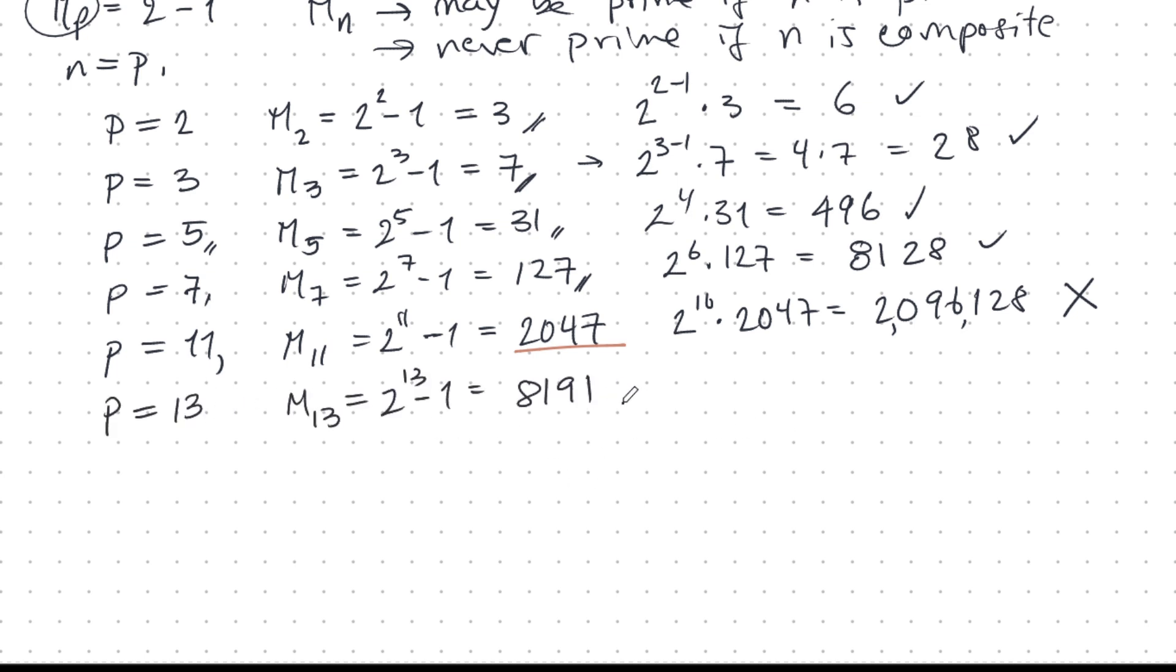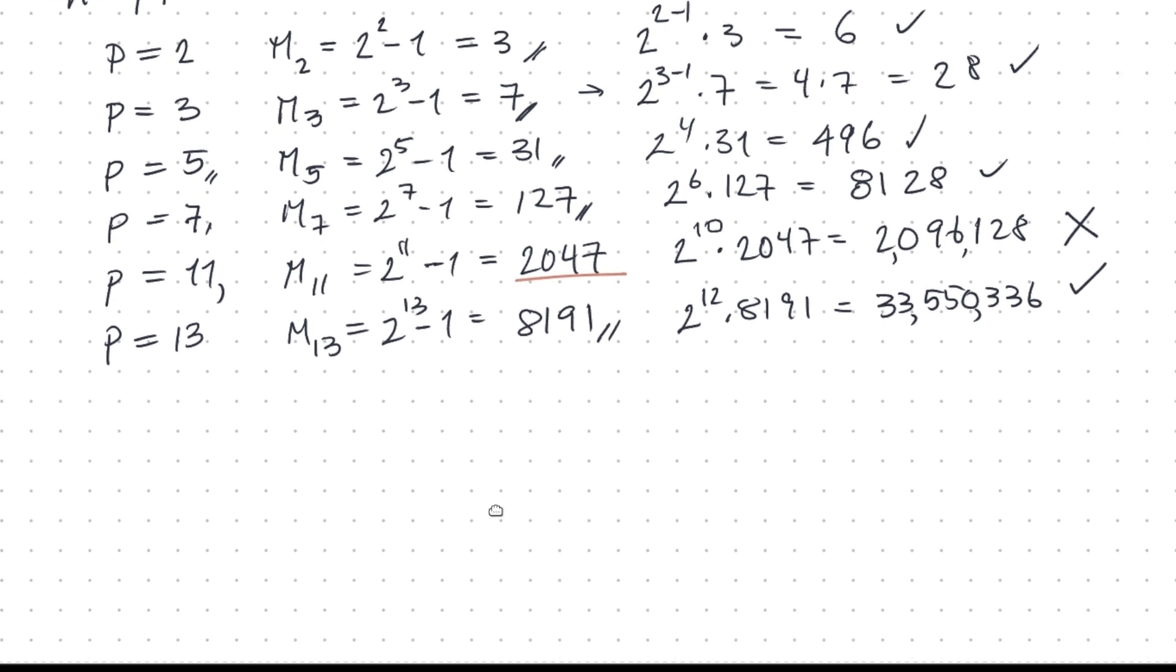The next one, p is 13, this one is prime. So I should get a perfect number. And I get this 33,550,336. And this is perfect. I checked it with Maxima. I don't know if the ancients knew about that one though. So that was the main result for a long time. Every prime Mersenne number leads to a perfect number.